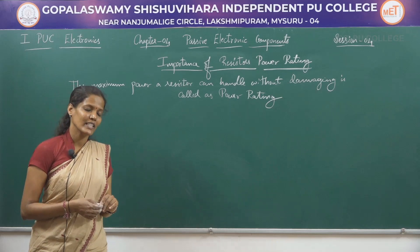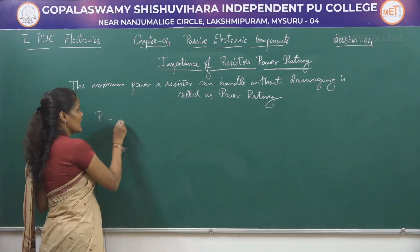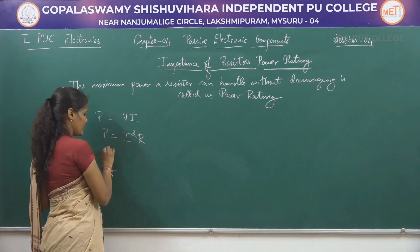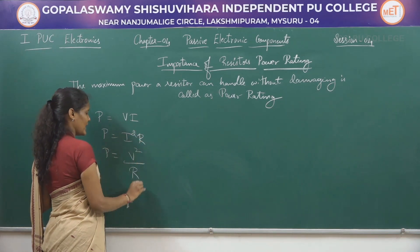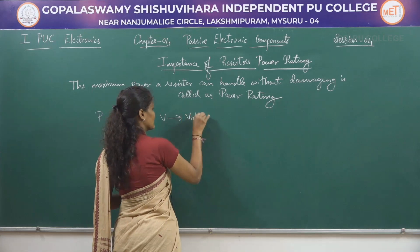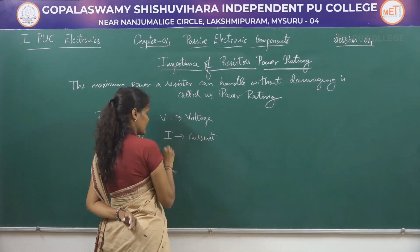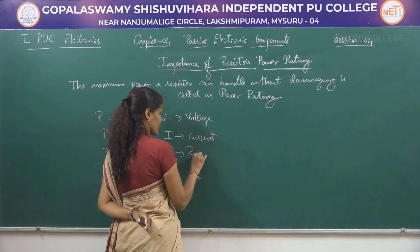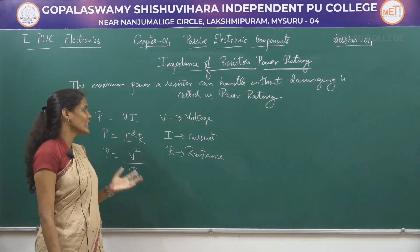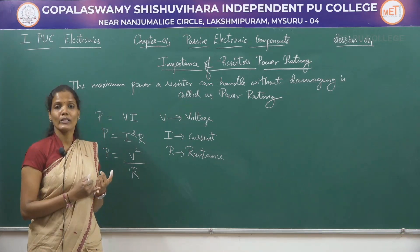The electrical power dissipation of a resistor in a DC circuit can be calculated using any of these three formulas: P = V × I, P = I² × R, and P = V² / R, where V is the voltage, I is the current, and R is the resistance. Using any of these three formulas you can easily find out the power rating of a given resistor.